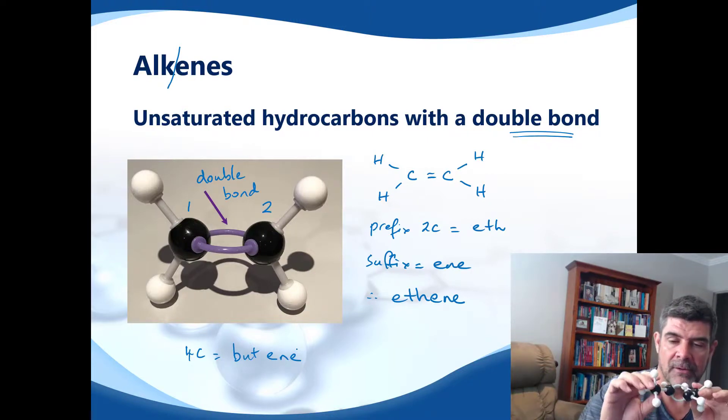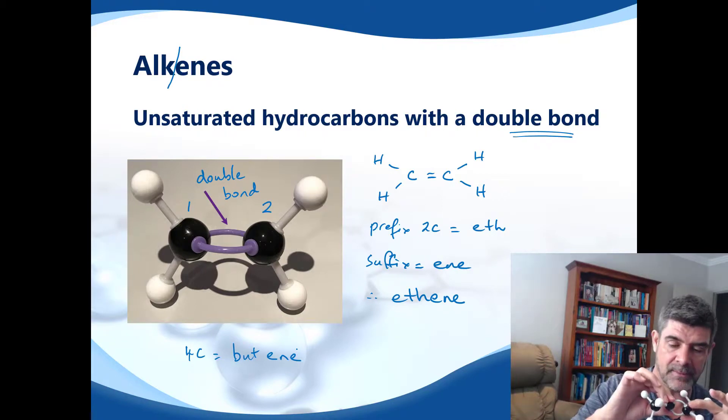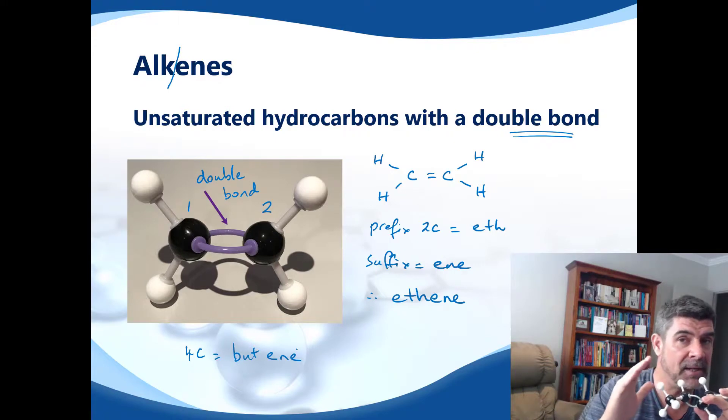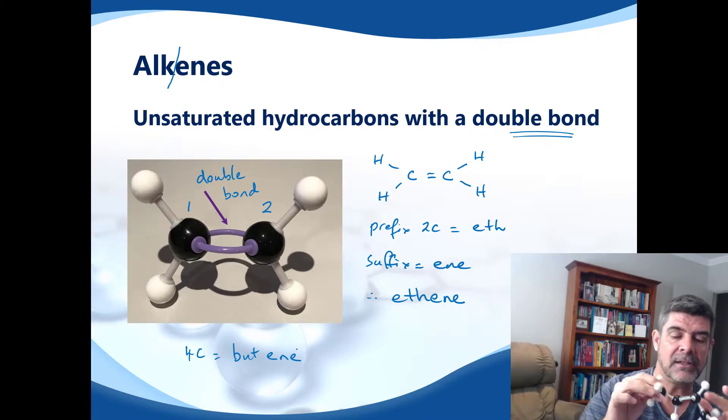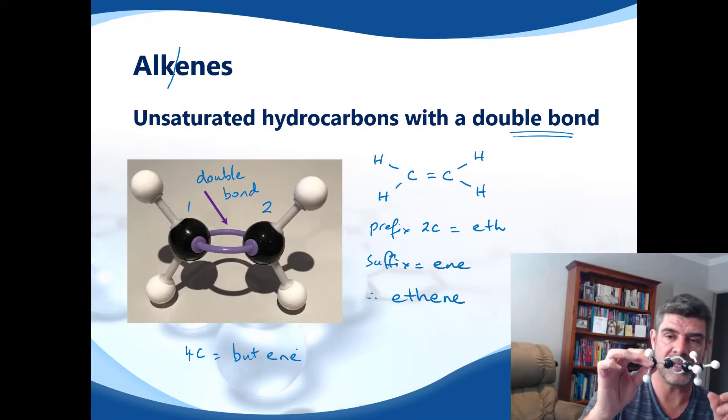So how do we name this particular compound? Well, it now has four carbons, so four carbons would be but, and the fact that it has a double bond means that it would be an "-ene". So this would be called butene. However, remember we were talking about the fact that sometimes the location or the position of a functional group, like a double bond, may be ambiguous. There may be more than one solution, and in fact, in this case, there is.